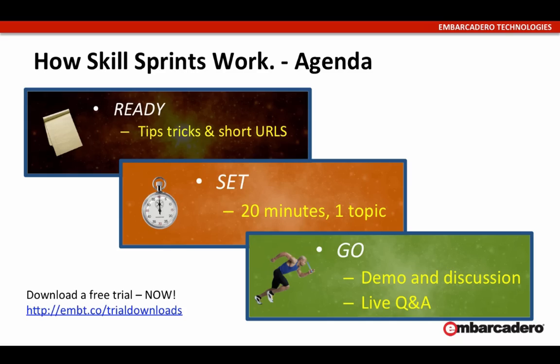This is one of the skills sprint sessions — short format sessions. There are going to be tips and tricks as we go, and some short URLs along the way to note down. All the short URLs start with embt.co, so you can literally just write down the last bit, which is case sensitive. Over the next 20 minutes we'll dive into how we can use the taskbar easily through our applications, see it in a live demo, and at the end there'll be some Q&A.